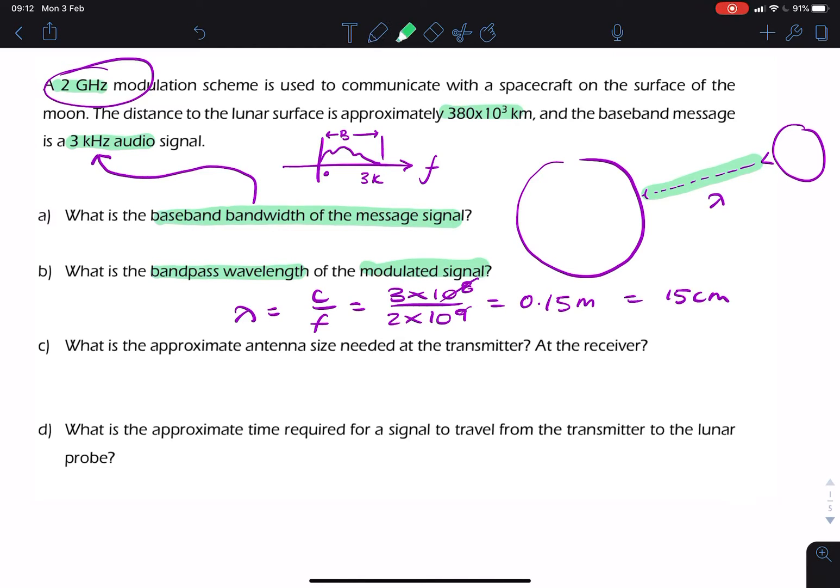Part C says, what's the approximate antenna size at both the transmitter and the receiver? At the receiver and at the transmitter. How big is the actual antenna? Now, if we say that the antenna size is proportional to the wavelength, we can say it's roughly in the order of one quarter of the wavelength.